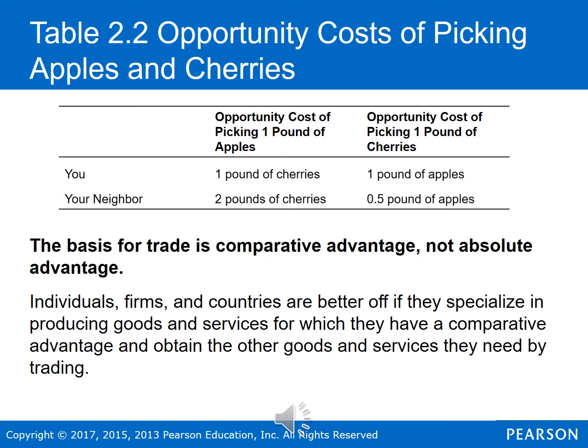On the other hand, the opportunity cost of picking one pound of cherries: for you, that's one pound of apples. But for your neighbor, she only has to give up 0.5 pounds of apples — so she's relatively better at producing cherries than you are. The basis for trade, and whether a trade is beneficial for both parties, is based on comparative advantage, not absolute advantage. Individuals, firms, and countries are better off if they specialize in producing goods and services for which they have a comparative advantage, and obtain the other goods and services they need by trading rather than producing them themselves.